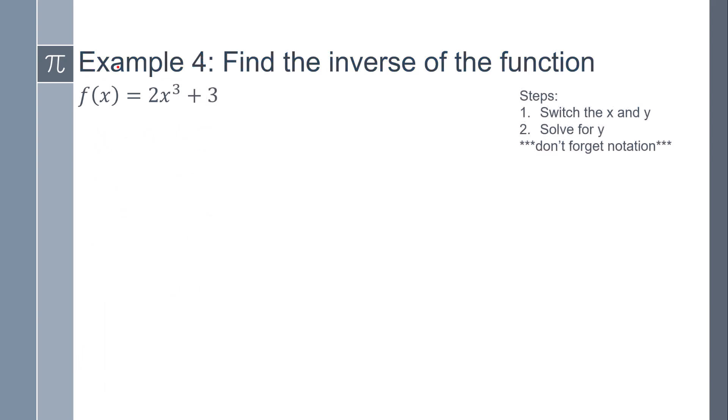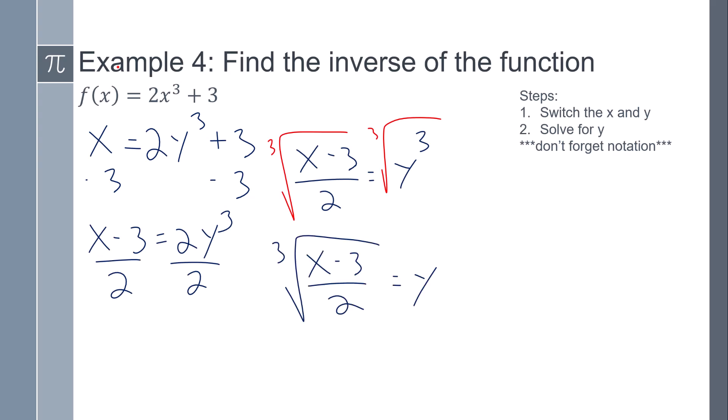Let's look at one more here. So the first thing we do is we switch the x and y. Then I just have to get y by itself. Subtract 3 on both sides, divide both sides by 2, cube root both sides, and then I have my answer. Now if this is a function, which it is, I can use that special notation.